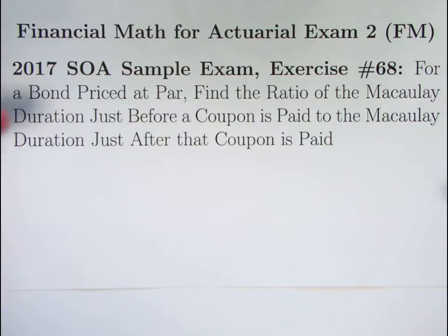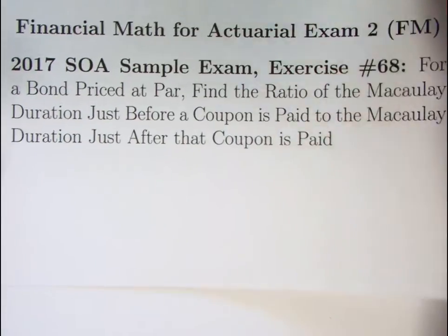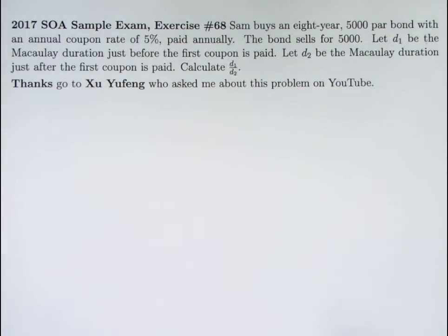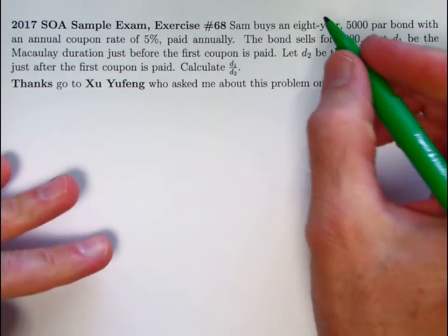For a bond that is priced at par, and that is important, the goal here is to find the ratio of the Macaulay duration just before a coupon is paid to the Macaulay duration of that bond just after that same coupon is paid. So thanks, first of all, go out to Xu Yufeng. I hope I pronounce that okay. On my YouTube channel, who watches a lot of these videos, he asked me about this problem.